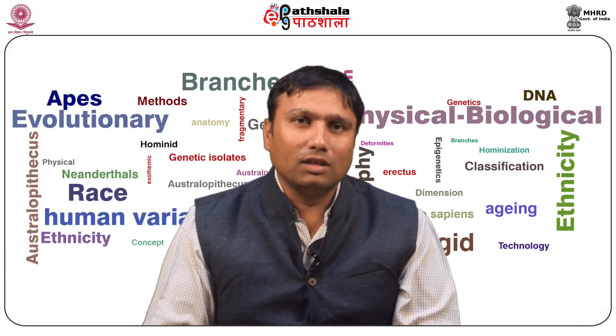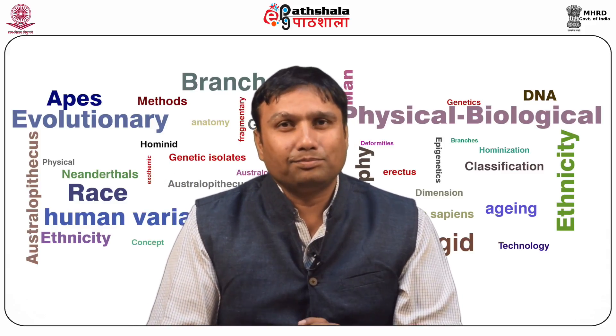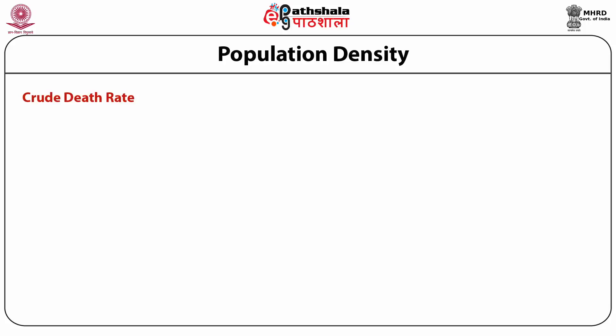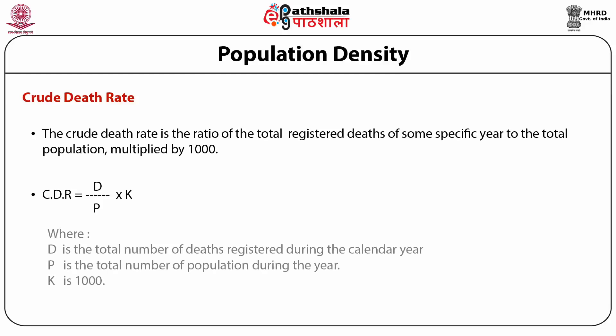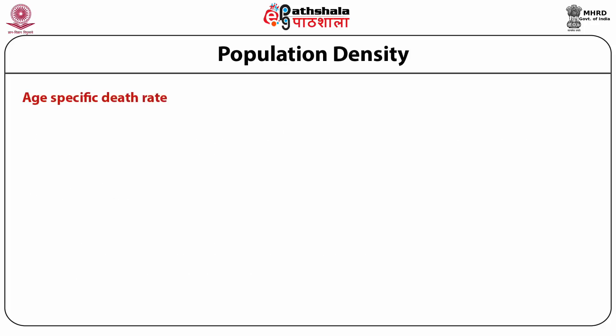Crude Death Rate. The crude death rate is the ratio of total registered deaths in a specified year to the total population, multiplied by 1000. It is calculated as CDR = D/P × K, where D is the total number of deaths registered during the calendar year (1st January to 31st December), P is the total population of the same year, and K is 1000 or 100.